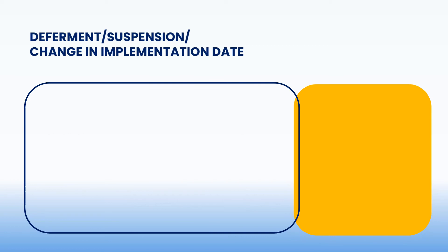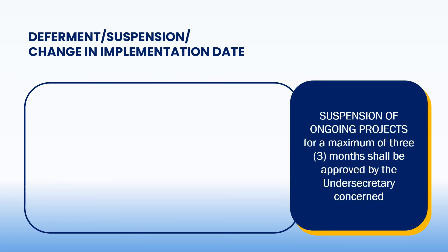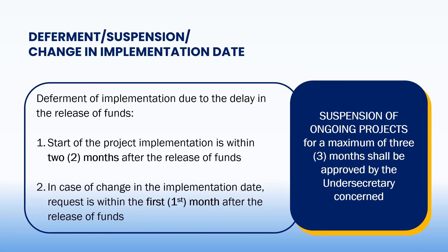Suspension of an ongoing project for a maximum of three months shall be approved by the Under Secretary concerned. The monitoring agency shall then report to the ExeCom the suspension, upon which the ExeCom shall decide on the resumption, extension of suspension, or cancellation of the project.